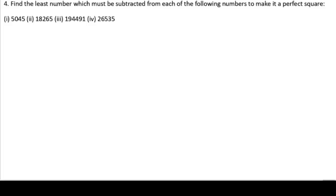Fourth problem: find the least number which must be subtracted from each of the following numbers to make it a perfect square. We need to make these numbers perfect squares by subtracting some number from them. Let us start the solution.